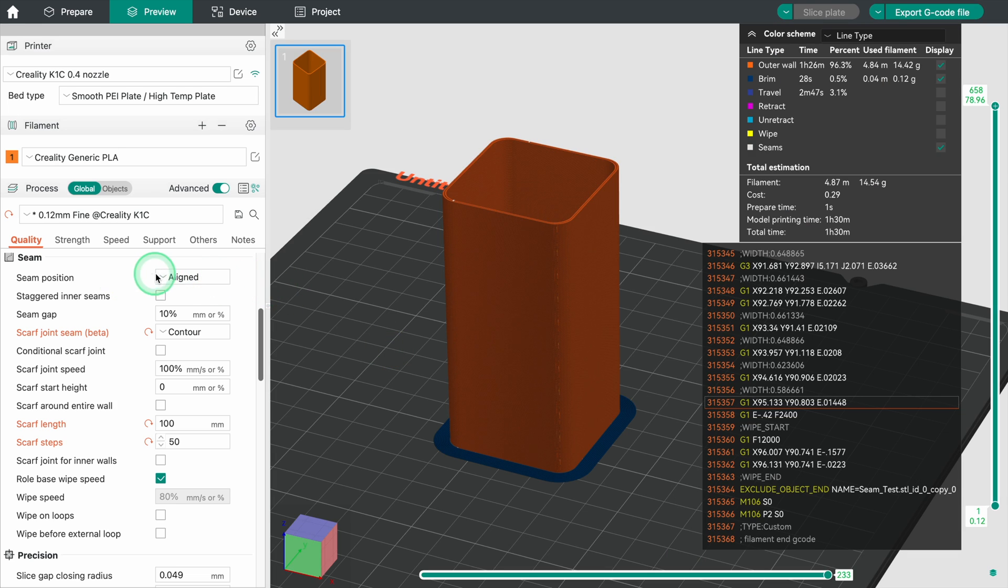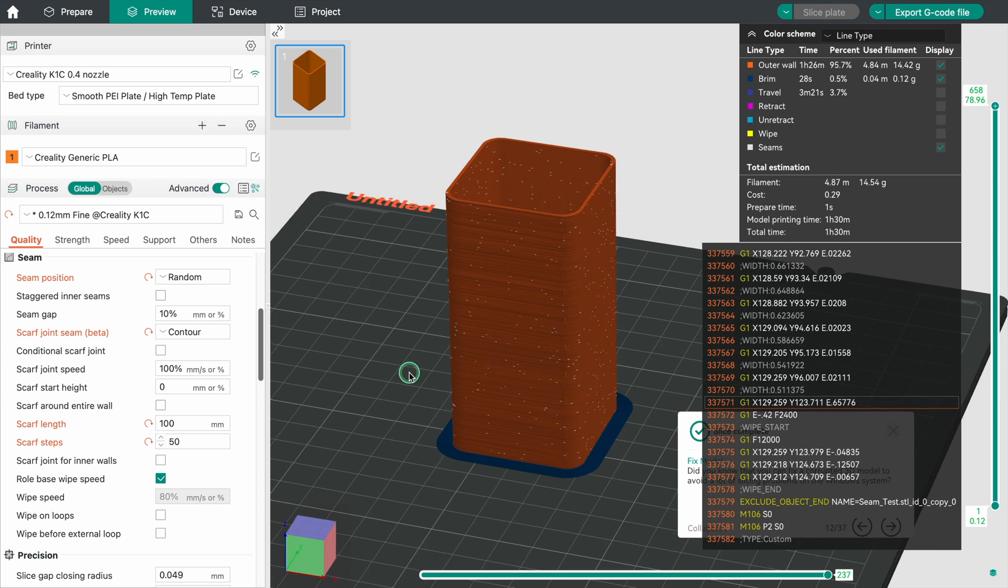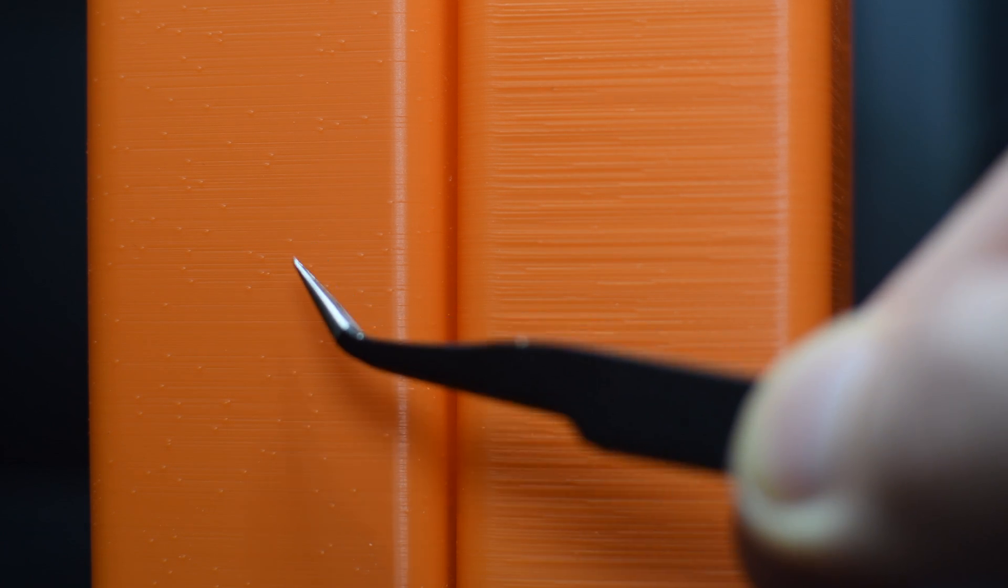Another way to avoid a seam is to set the positioning to random. In most cases however this is not a good idea as it creates unsightly blobs or holes on the surface of the object.